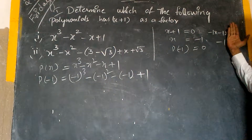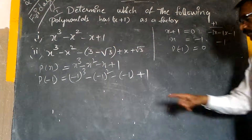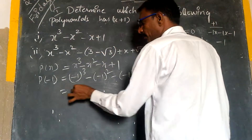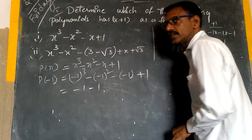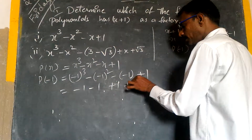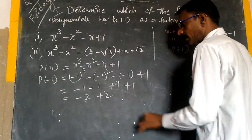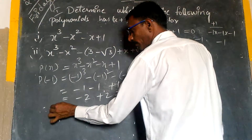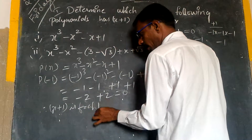So minus 1 whole cube gives minus 1, and minus 1 whole square gives plus 1. Minus into minus is plus, so here comes plus 1. This value is plus 1. Minus into minus is plus 1. So we get minus 1, minus 1 here giving minus 2, and plus 1 plus 1 giving plus 2. That gives zero. Therefore, x plus 1 is a factor of this polynomial.